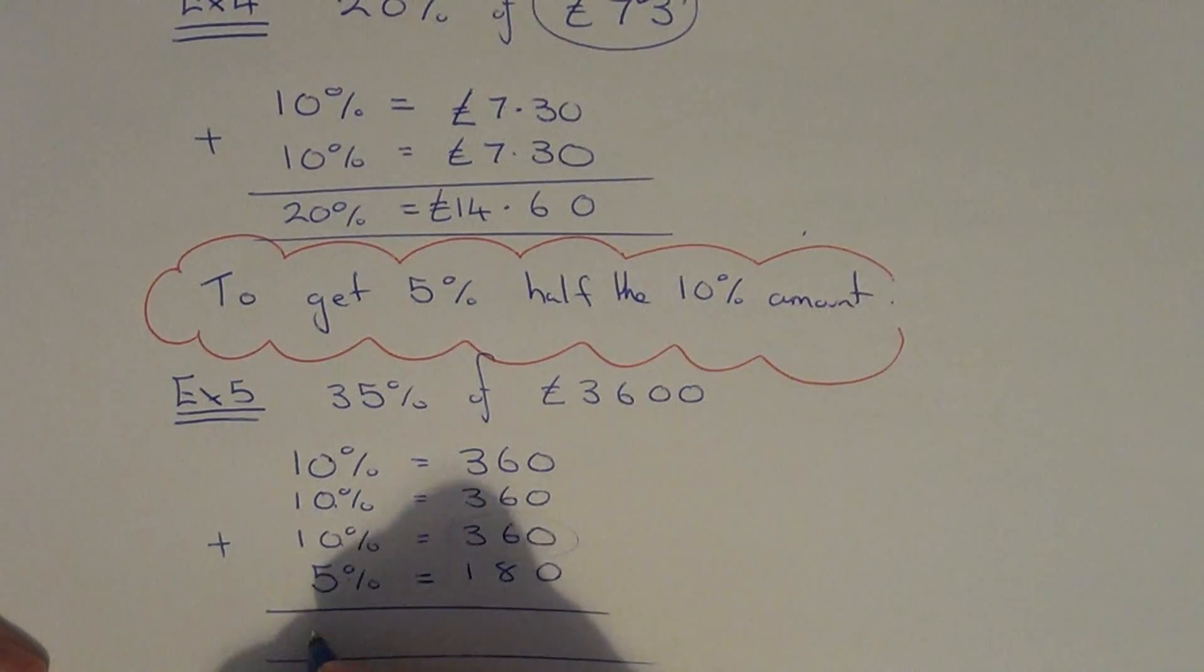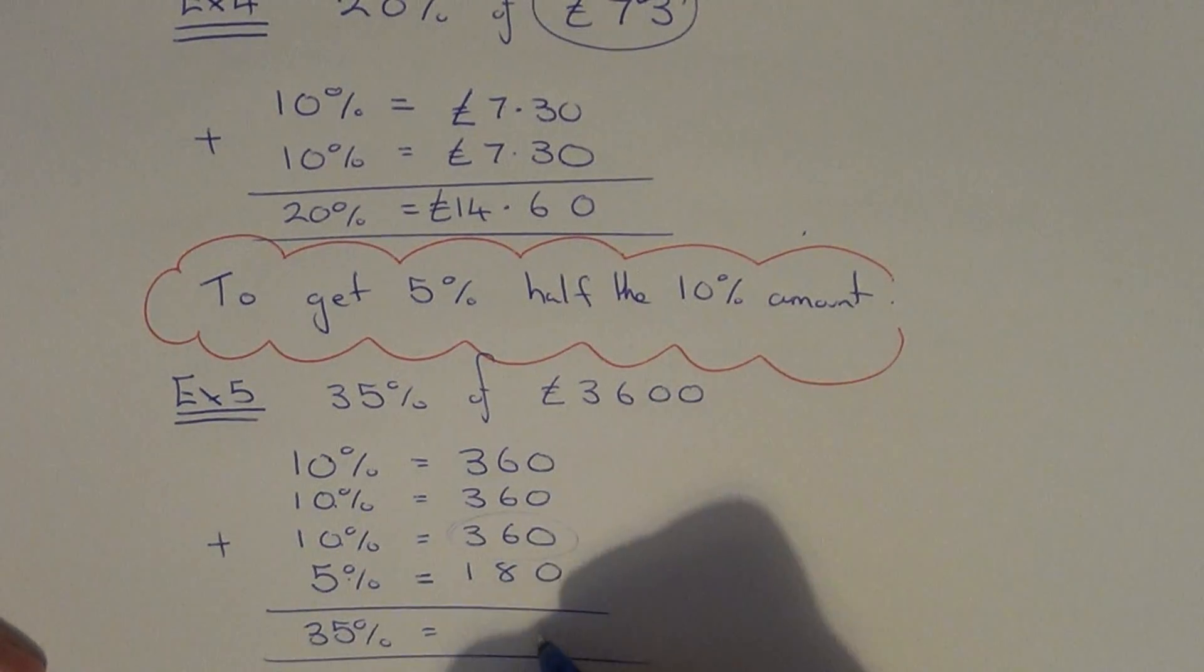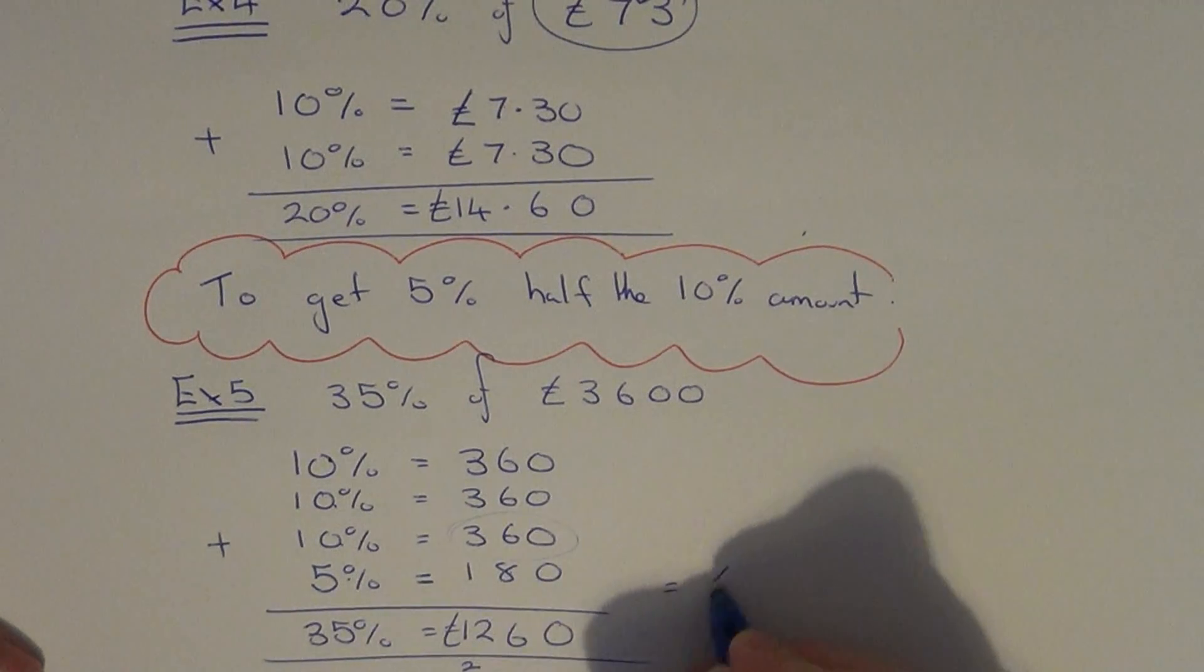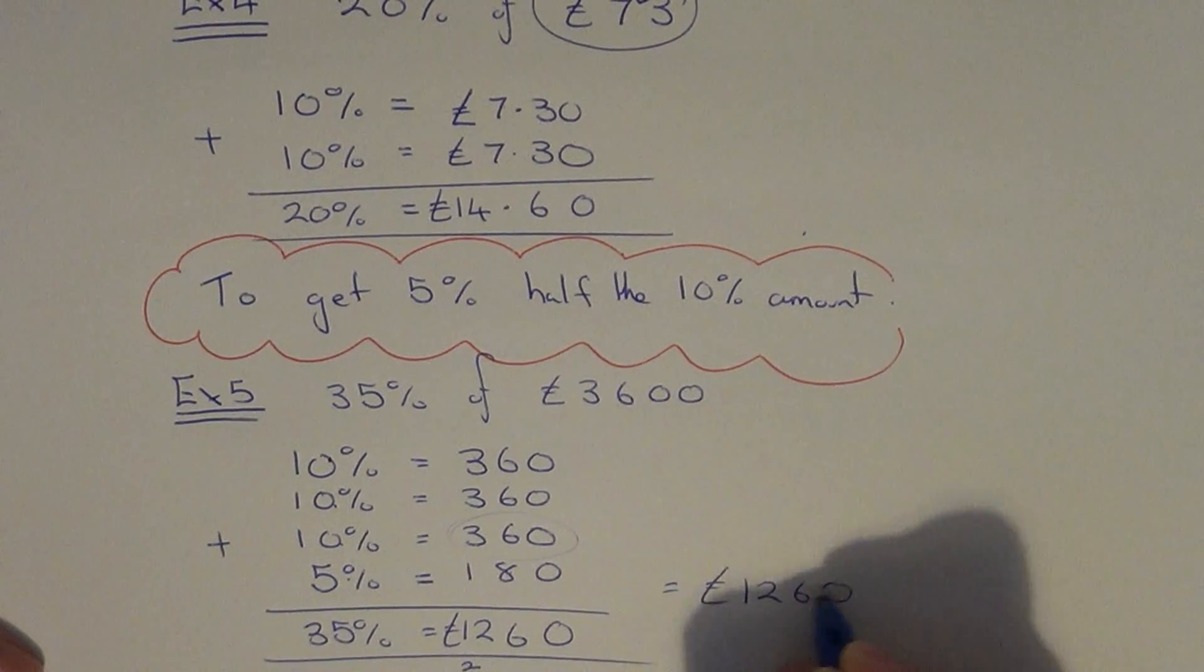So the final thing again is just to add all these numbers up. 10, 20, 30, 35%. And we've got 0, 8, 14, 20, 26, 3, 6, 9, 10, 11, 12. So we get a final answer of £1,260.